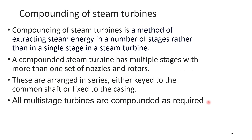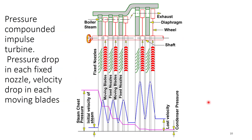Compounding of a steam turbine is a method of extracting steam energy in a number of stages rather than in a single stage. Compounding uses multiple sets of nozzles and blades arranged in series, keyed to the shaft, and a multi-stage turbine is compounded as required by the process. Now we will discuss compounding of the impulse turbine.